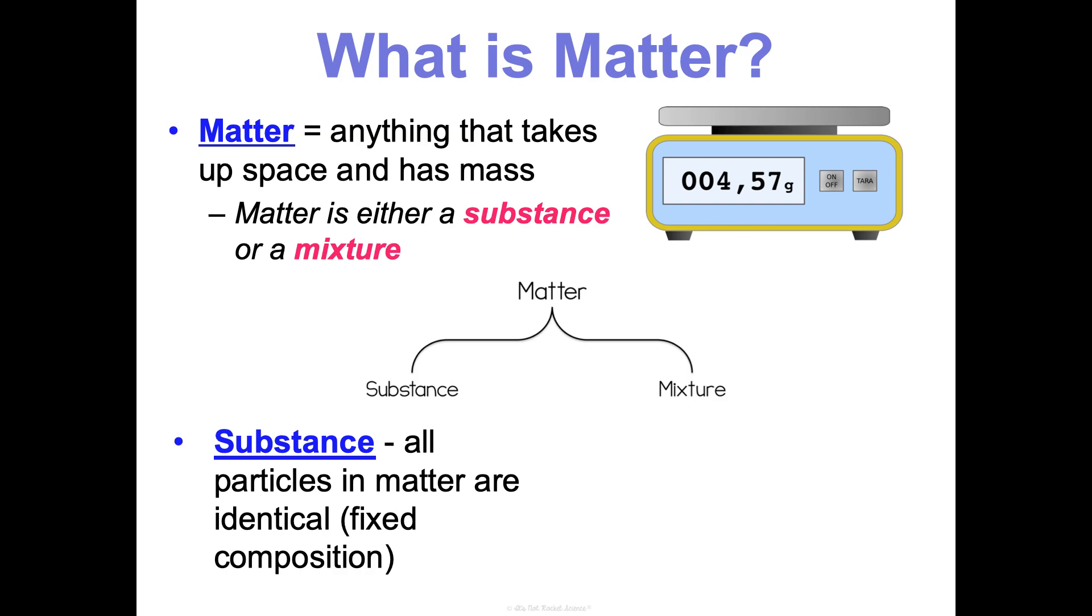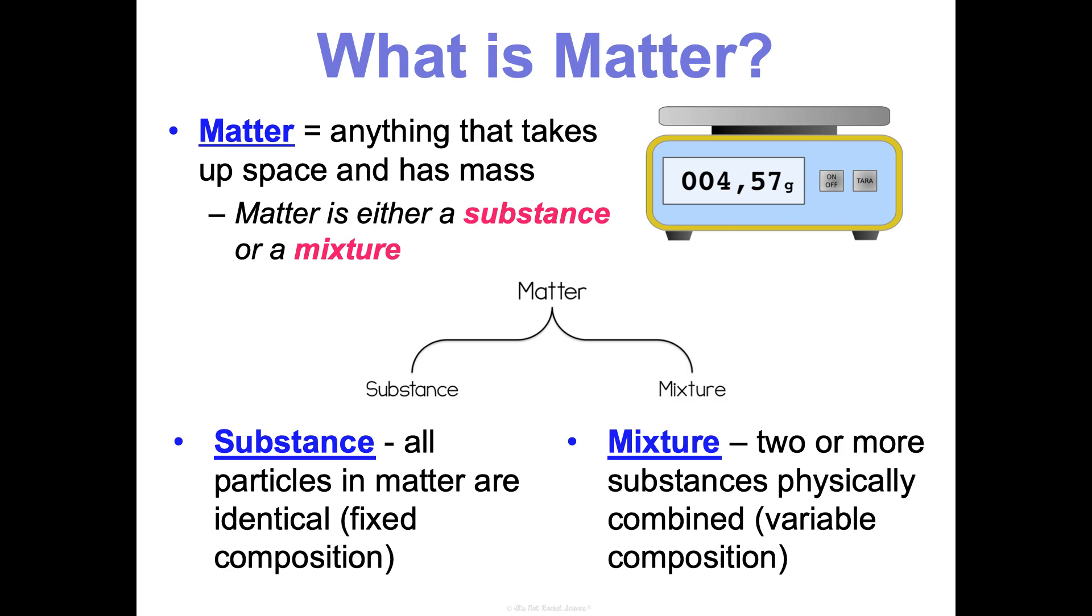A substance is when all of the particles in the matter are identical. We say it has a fixed composition throughout, whereas a mixture is two or more substances that get physically combined, and so the composition ends up being variable. We're going to walk through different types of substances and mixtures, and by going through those different types and giving you some real examples, it will help you understand these a little bit better.